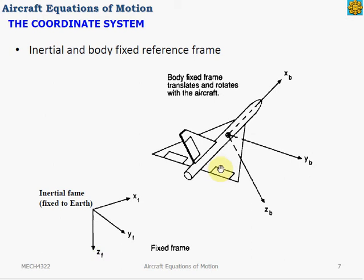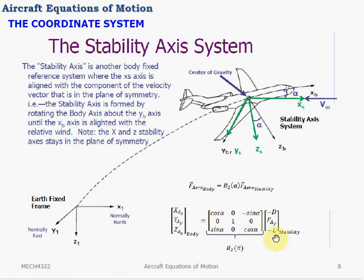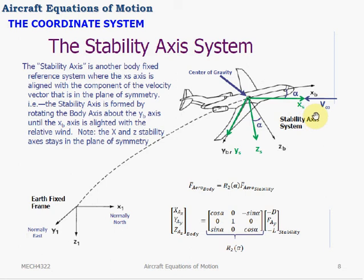For the body fixed frame, positive X is pointing straight out of the aircraft's nose, positive Y is out through the aircraft's right wing, and positive Z is pointing down. In aircraft motion, we describe one more reference frame: the stability axis. The stability axis is also fixed to the aircraft's body, but the X axis is aligned with the velocity vector. We get the stability axis system by rotating the X axis of the body fixed frame through the angle of attack alpha, aligning it with the velocity vector.